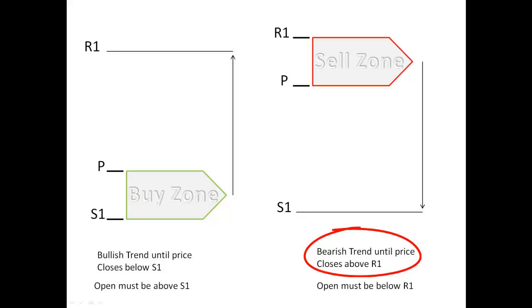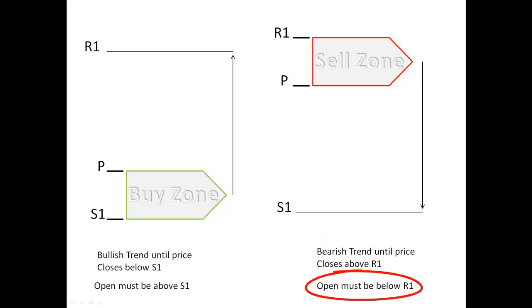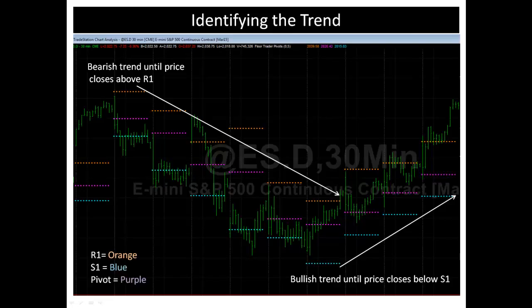And again, if you're in a bearish trend and a downtrend, you want to make sure that the price opens below R1. So let's take a look at how this happens in identifying the trend.